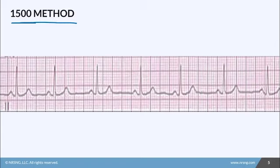Just like the other methods, you pick two QRS complexes. Instead of counting large boxes, you count the small boxes in between. In this example, counting gives us 20 small boxes.